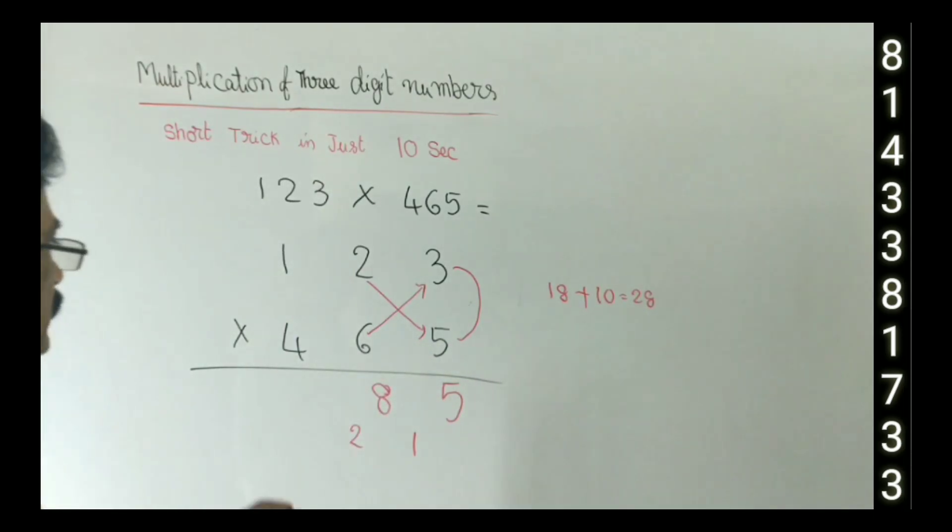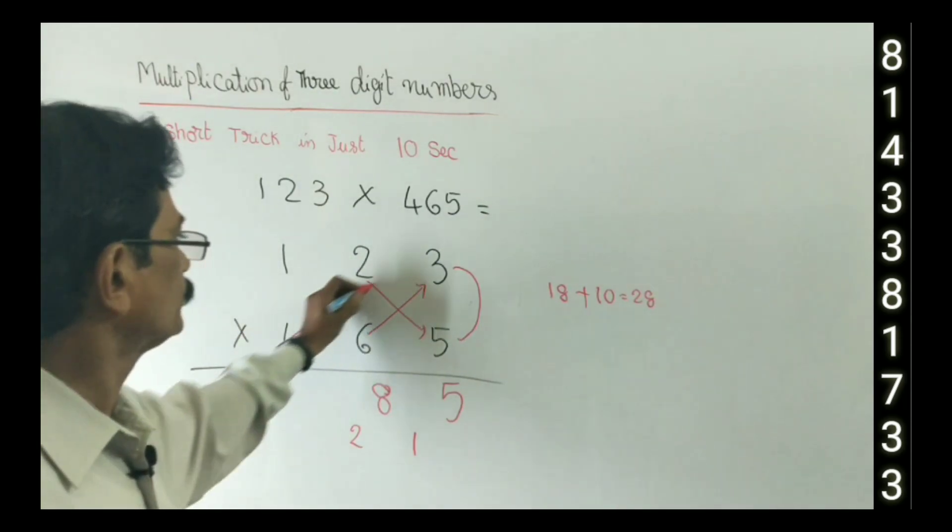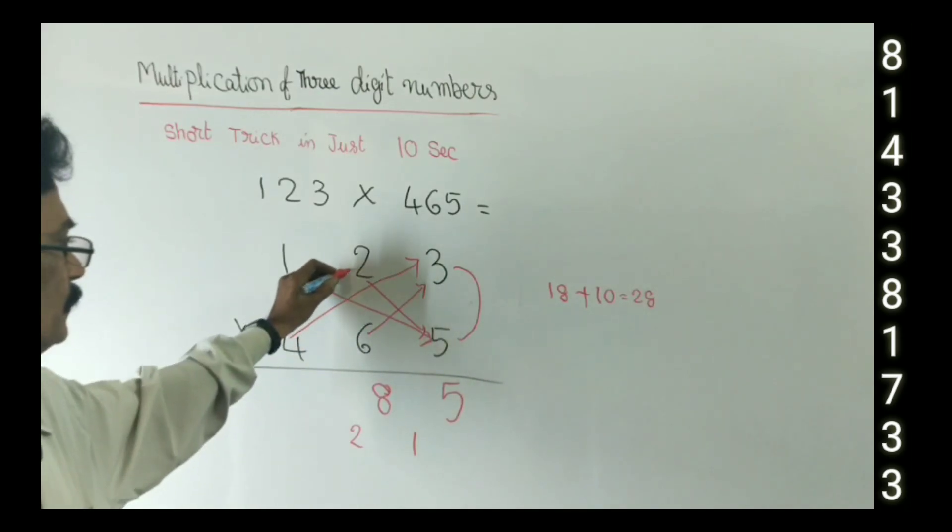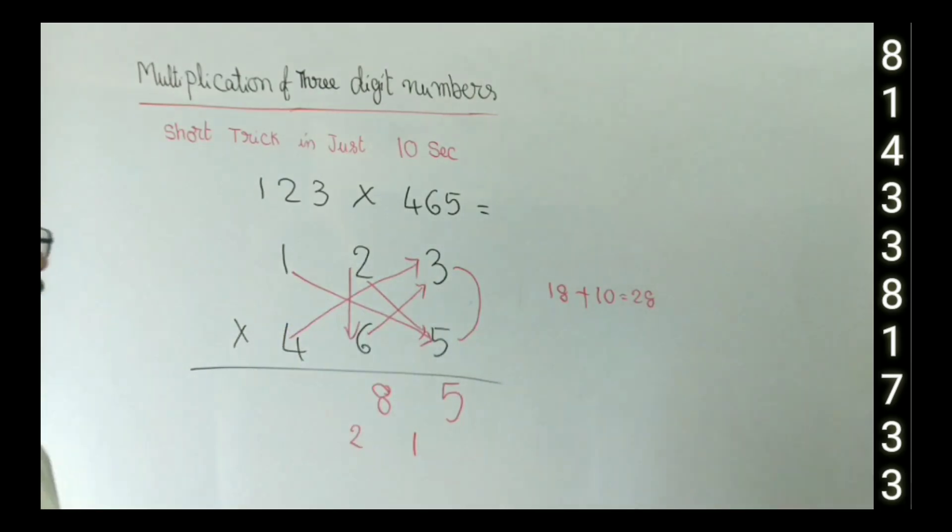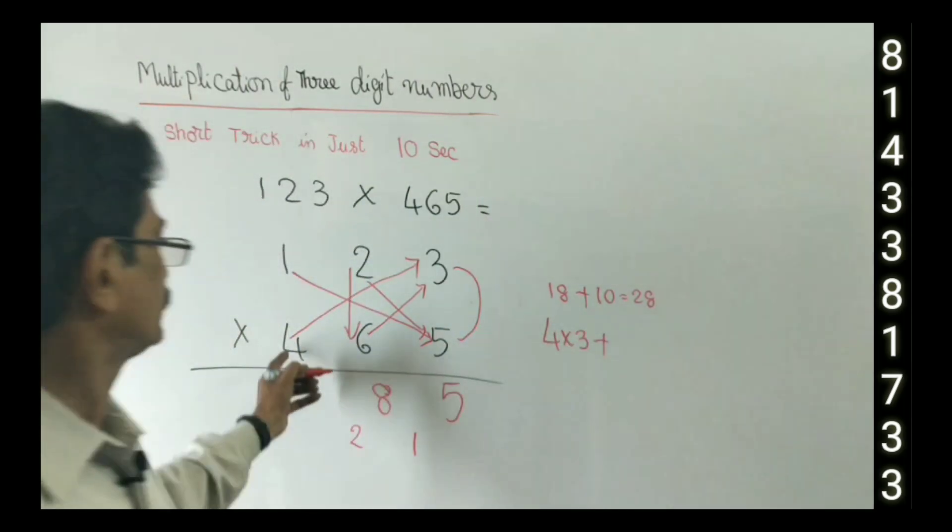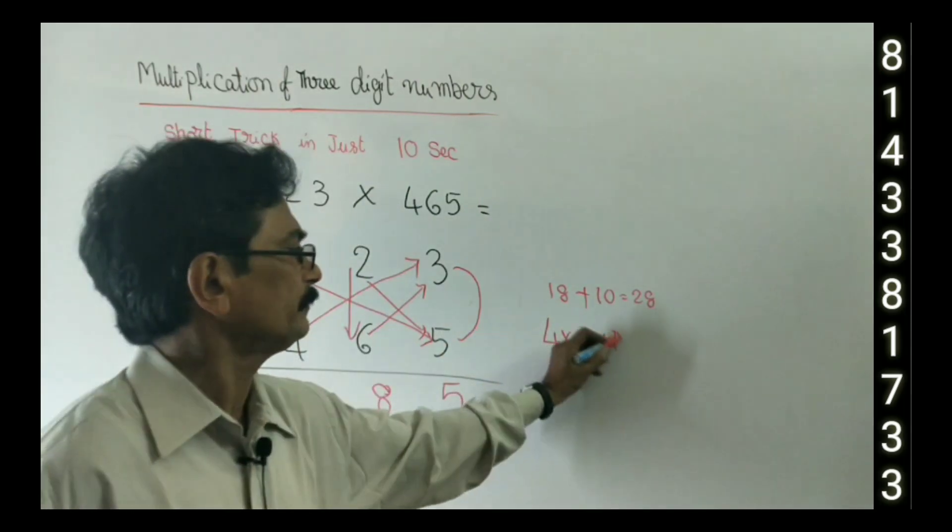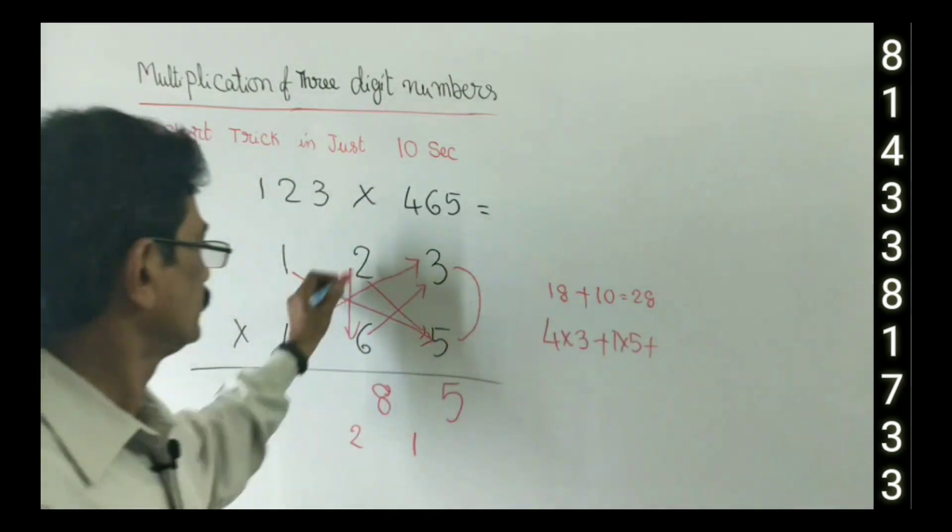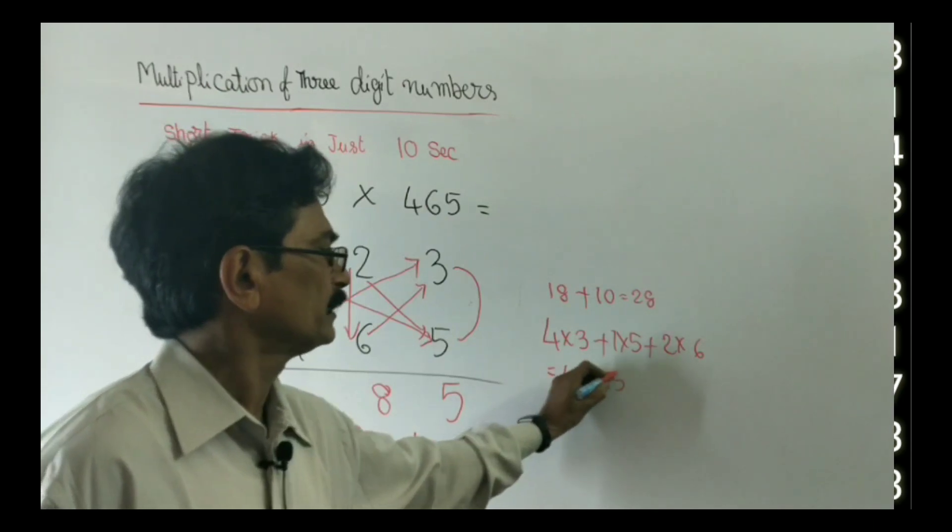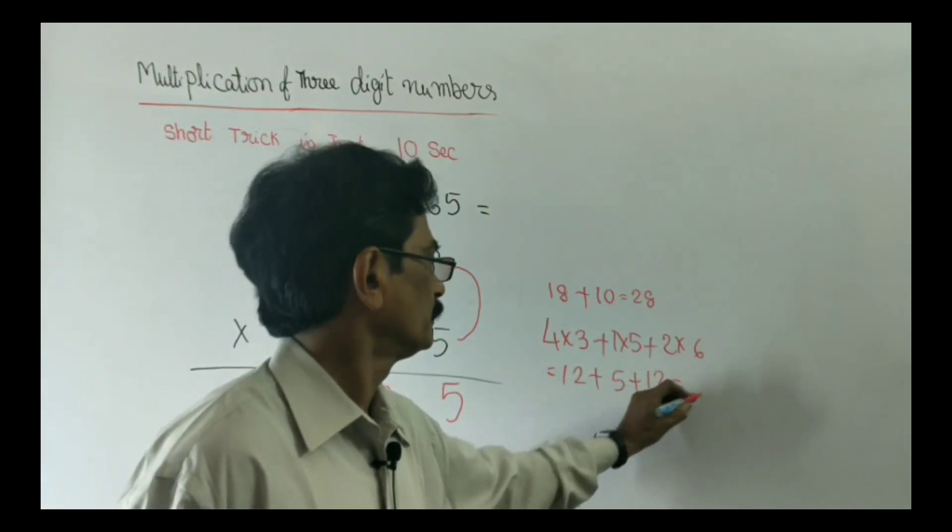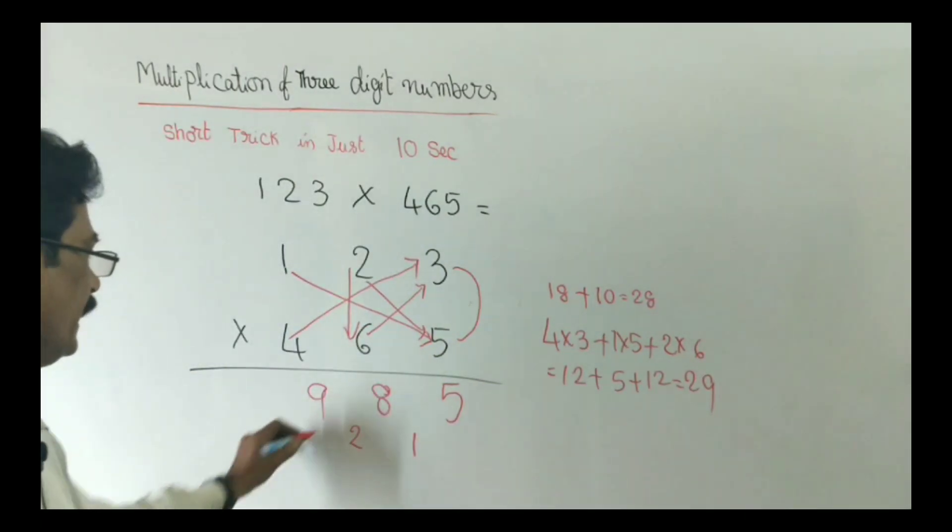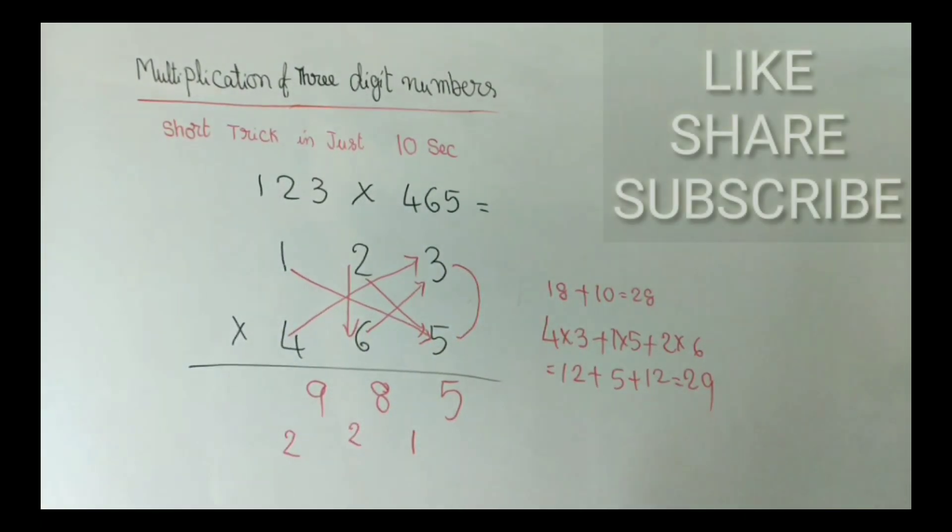Next step, third step: 4 into 3, 1 into 5, 2 into 6. See here, 4 into 3 plus 1 into 5 plus 2 into 6, that is equal to 12 plus 5 plus 12, that is 29. 9 right here, 2 right in the down.